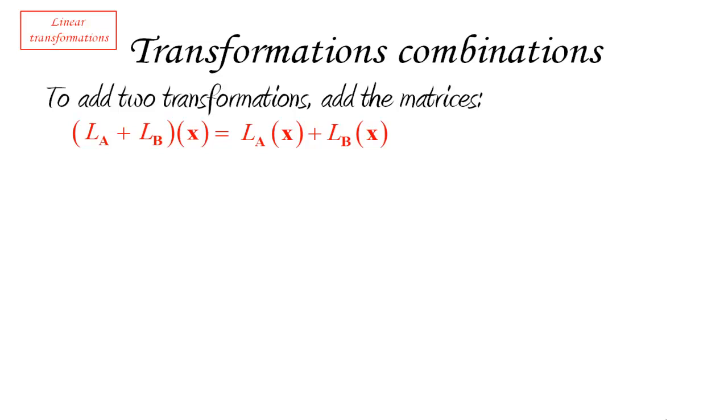That implies that the two matrices A and B have to have the same dimensions, otherwise we will not be able to add them. So this is a little bit of a restriction in the sense that in order to add two of these linear transformations, they must have the same domain and the same co-domain, which is something that we don't normally see in calculus.